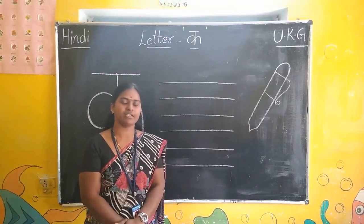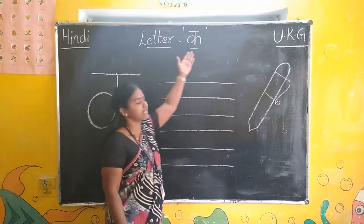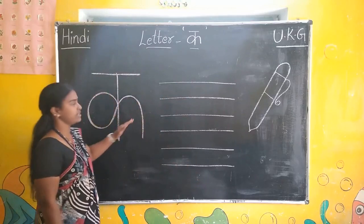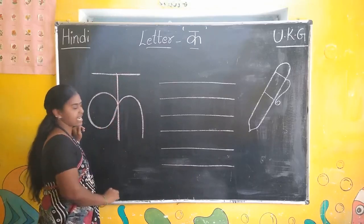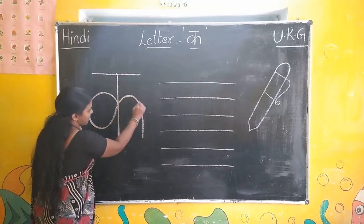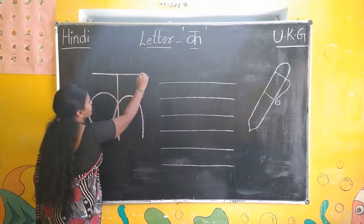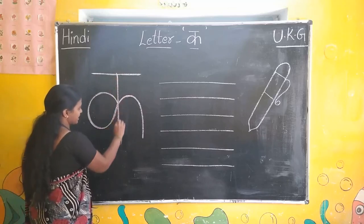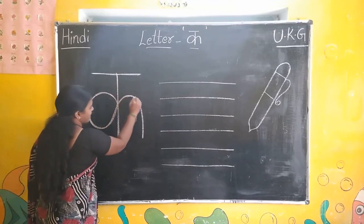Hello everyone. Welcome to Hindi class. Today we are going to learn a new letter Ka. How to write — I will show you. Look here children. First, standing line. You have to write standing line and a circle, one circle and curve, and up you have to keep sleeping line also. Don't forget this. Once again: standing line, circle and curve.